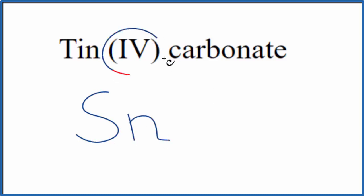We also see this roman numeral IV here. That tells us tin is a transition metal, and it has an ionic charge of 4+.